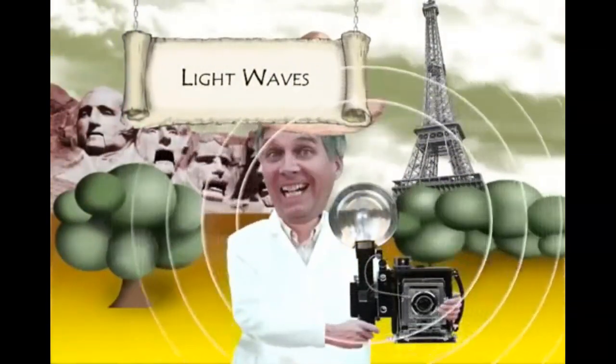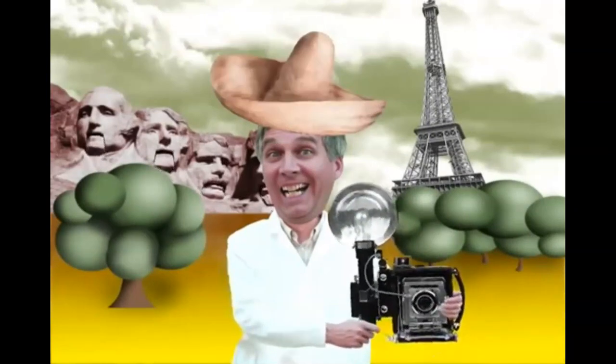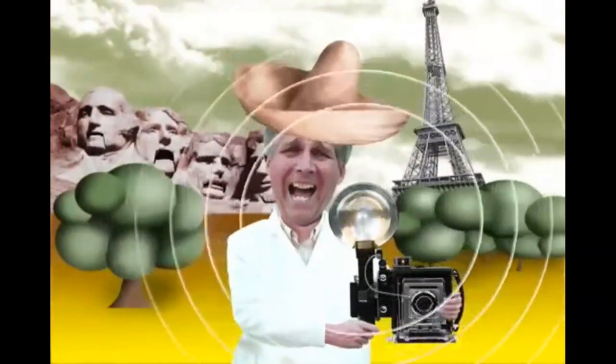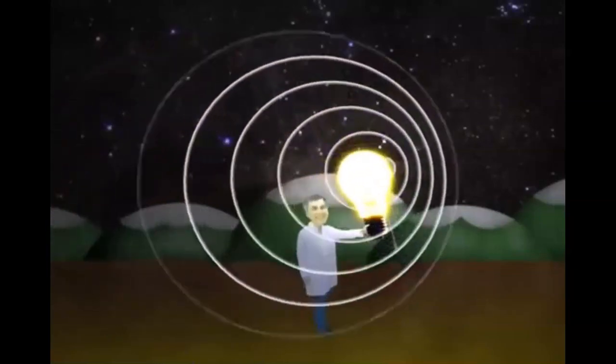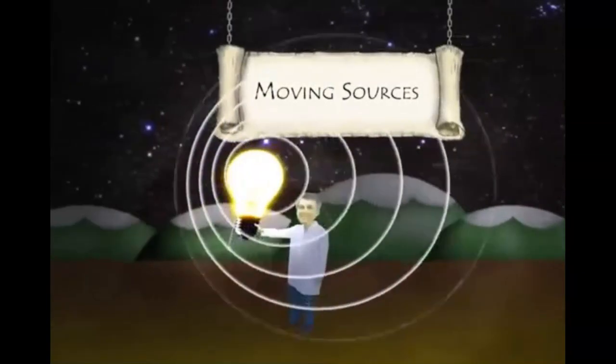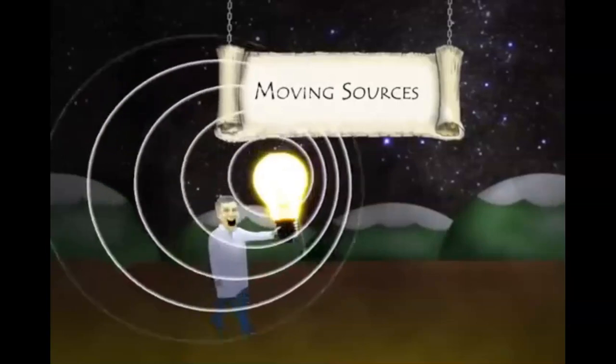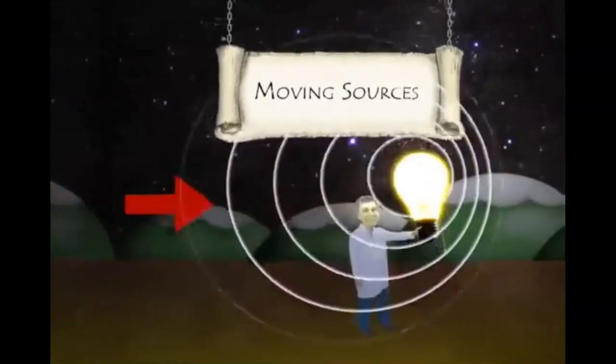When the source of a wave is stationary, the waves can be thought to form circles radiating out from the source. But when the source is moving, something very interesting happens. The waves ahead of the moving source are bunched closer together. The waves trailing behind the moving source are spread out.